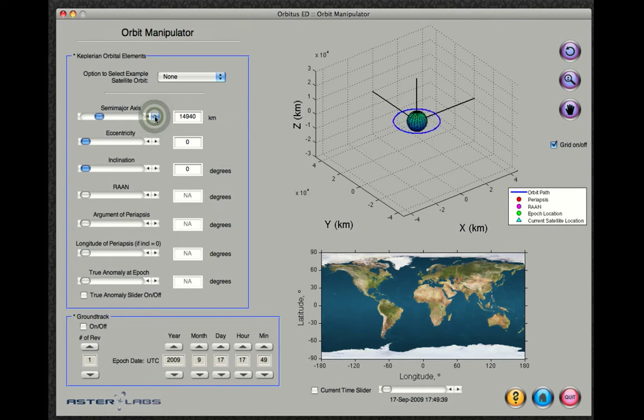As these elements are altered, the orbit image to the right is updated in real time. This gives the user a very unique and fast perspective of how each element affects the geometry of an orbit and its orientation in space.